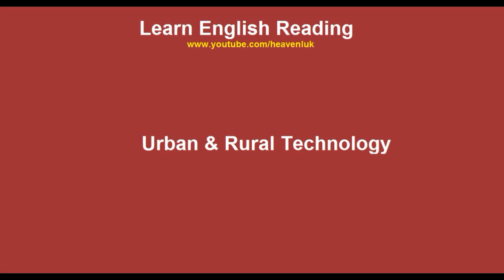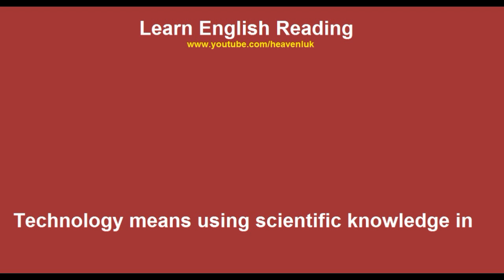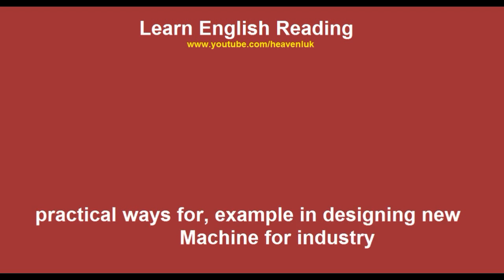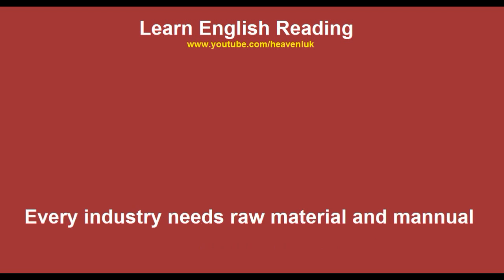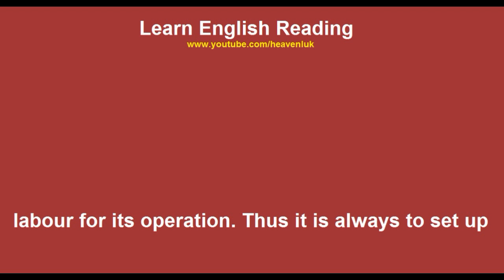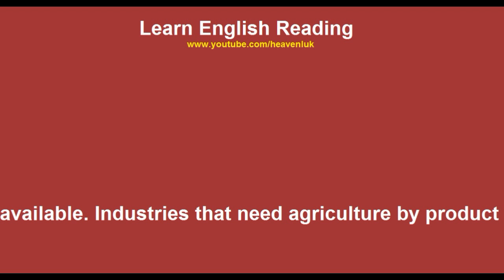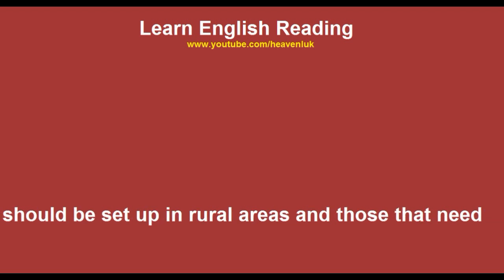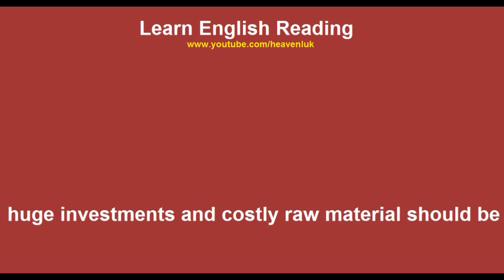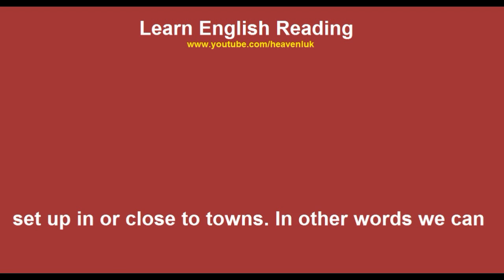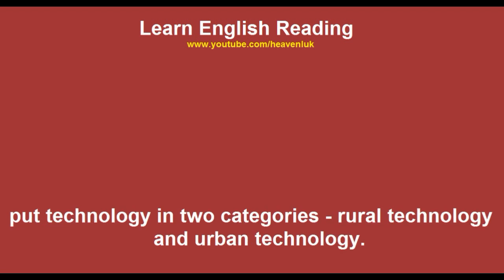Urban and rural technology: technology means using scientific knowledge in practical ways, for example in designing new machines for industry. Every industry needs raw materials and manual labor for its operation. Thus it is always advisable to set up an industry at a place where both these are easily available. Industries that need agricultural by-products should be set up in rural areas, and those that need huge investments and costly raw materials should be set up in or close to towns.